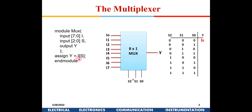You can write the entire mux in a single line: Y = I[S]. Here, I is 8-bit data and S selects which bit is routed to Y. If S equals zero, I[0] is routed to Y; if S equals one, I[1] is routed; if S equals seven, I[7] is routed. This is exactly what a multiplexer requires.